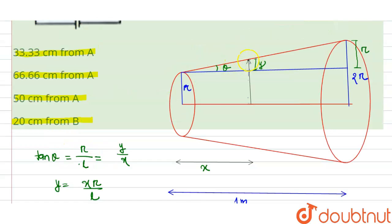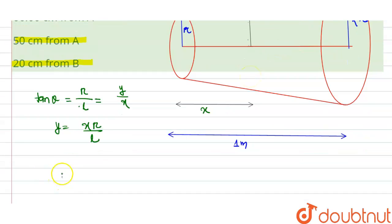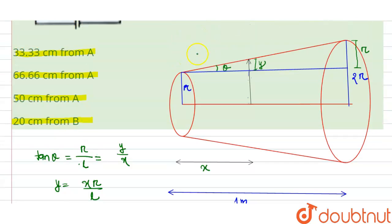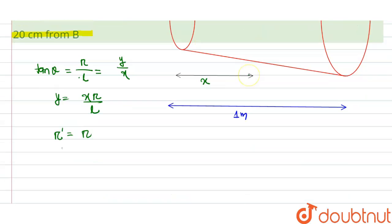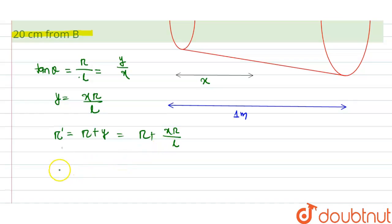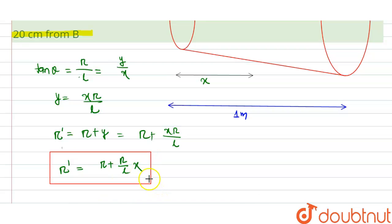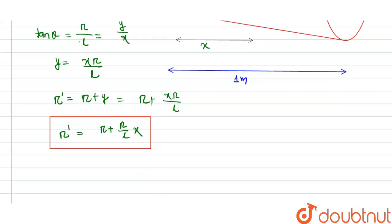We found y = x·r / L. So the radius at point x, which we call r(x), is r plus y, giving us r(x) = r + (r/L)·x, which simplifies to r(x) = r·(1 + x/L). This is our expression for the radius at any point x along the wire.